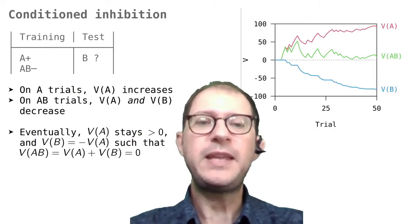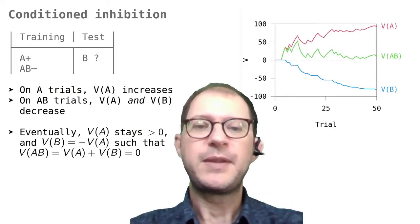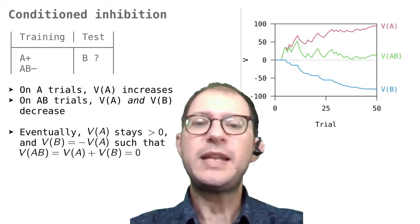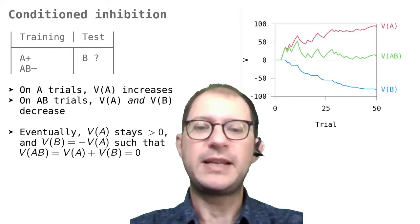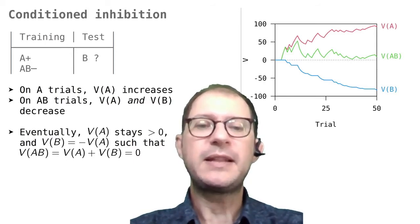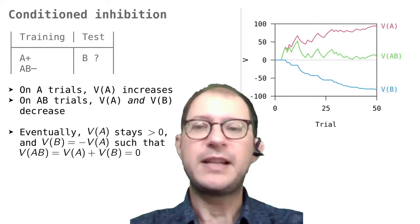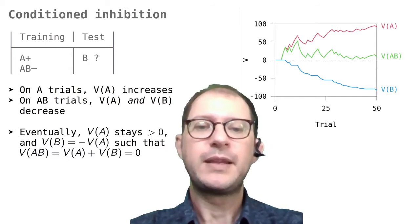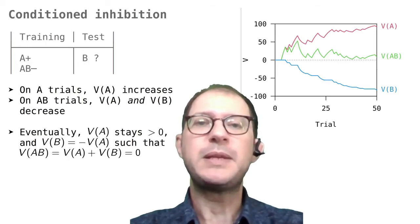We can also look at what is happening to B. In fact, the reason why V(AB) goes to zero is that V(B) becomes negative, as we can see in this updated graph. B receives only negative updates because it is only presented on unrewarded trials. And we can see, in fact, that the curve for B is either flat when there is an A trial that does not involve B, or goes down, and this is when we have an AB trial. It never goes up, because there are no reinforced trials where B is present.